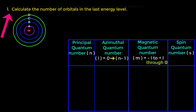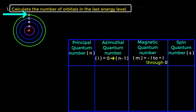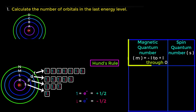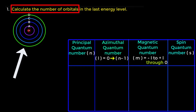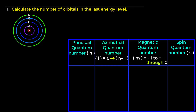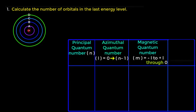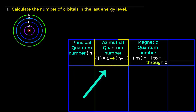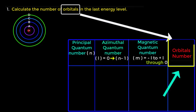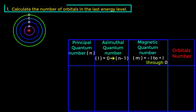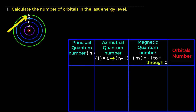Look at the first question: calculate the number of orbitals in the last energy level. Magnetic quantum number represents orbital. For this question we will calculate the first three quantum numbers. The last energy shell is N (fourth shell). For this N shell, principal quantum number equals 4. Now we will calculate the azimuthal quantum number: with N equals 4, L equals 0 to (4 minus 1), that is 0 to 3, giving values 0, 1, 2, and 3.